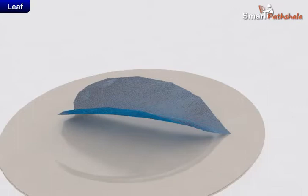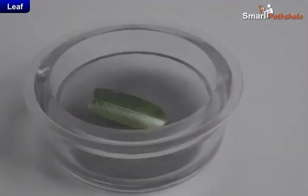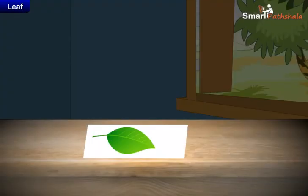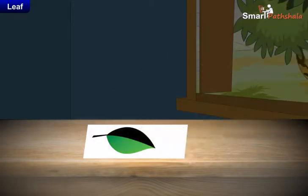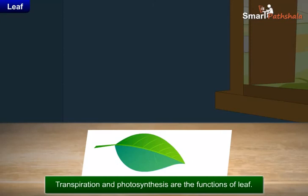Now let us understand whether starch is synthesized in the leaf or transferred from other parts. Place a potted plant with green leaves in a dark room for a day or two. Now cover a portion of a leaf of the plant completely with black paper and leave the plant in the sun for a day. Remove the leaf covered in black paper and repeat the test for starch. You will find that the part of the leaf which was covered by black paper is not converted into blue. From the above activities, we may conclude that both transpiration and photosynthesis are the functions of leaf.